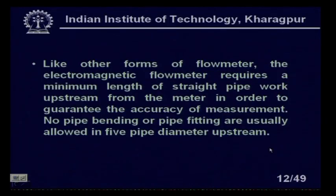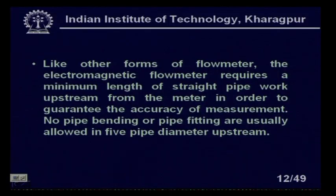Like other flow meters, the electromagnetic flow meter requires a minimum length of straight pipe work upstream to guarantee measurement accuracy. No pipe bending or pipe fittings are usually allowed in 5 pipe diameters upstream — this is less than the 20 pipe diameters required by some other flow meters. Note that this meter measures the average flow velocity.